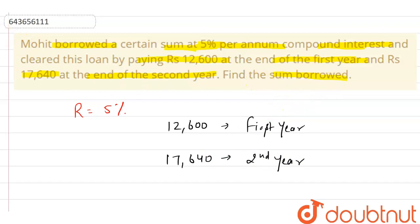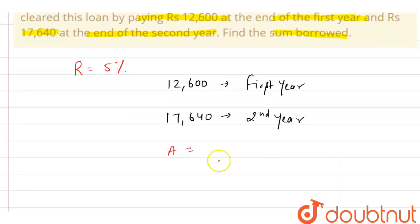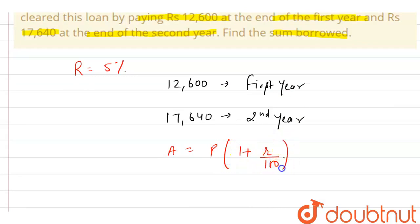We know that the formula is: A equals P into (1 + R/100) whole raised to power T, where T is time, R is rate, P is the principal amount, and A is the amount.